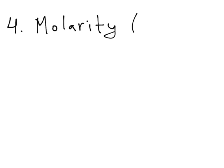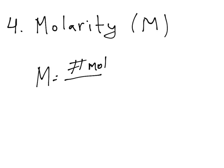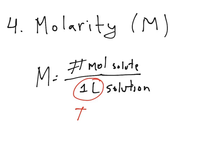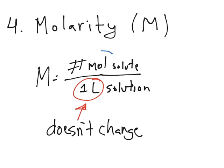Finally, the fourth unit or way to measure concentration is molarity, written as a capital M. It is simply the number of moles of solute over one liter of solution. That denominator of one liter doesn't change — the number of moles is what will usually change. I'll be talking a bit more about molarity in the following video, because it is the one you will use the most as a unit of concentration.